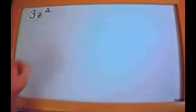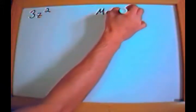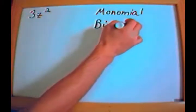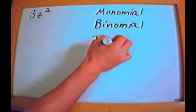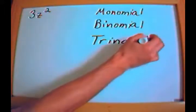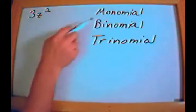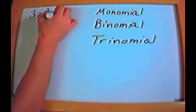Let's take something like 3z squared. What is that? The choices here are going to be monomial, binomial, or trinomial. These are the three things we can choose from. Mono means 1, bi means 2, and tri means 3, so it's fairly obvious. This is a monomial.